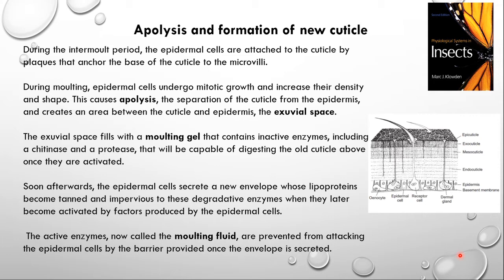Very soon after formation of the exuvial space, it becomes filled with a gel called the molting gel - basically a cocktail of inactive enzymes like chitinase and protease. So we have the older exoskeleton, the epidermis, and an exuvial space in between which is now filled with molting gel containing inactive enzymes. After that, the epidermis starts to secrete a new exoskeleton, and once that happens, the molting gel becomes the molting fluid, which now has active enzymes.